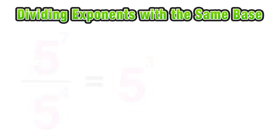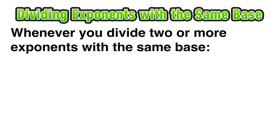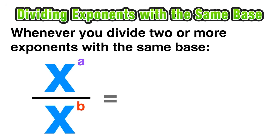And this relationship is going to actually be a law for exponents that says that whenever you divide two or more exponents with the same base such as x to the a divided by x to the b is equivalent to x to the difference of the numerator and the denominator.